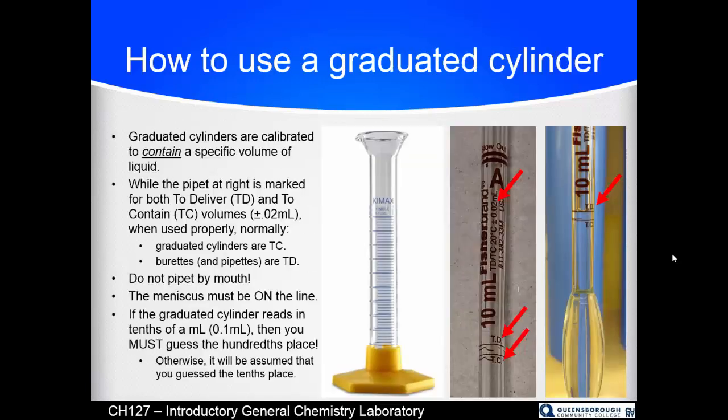In order to measure the density of our unknown solid and liquid, we're going to use two different precision measuring devices. We're going to use a graduated cylinder, which is the item on the left here, which measures volumes pretty precisely. It is generally a to-contain type of measuring device. Meaning if I put 5.00 milliliters in this 10-milliliter graduated cylinder, that's how much it would contain. It doesn't necessarily mean that's how much it would pour out.